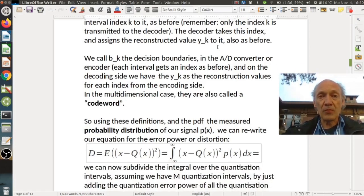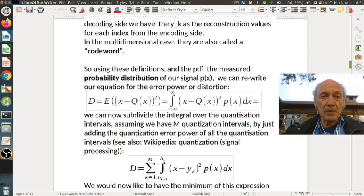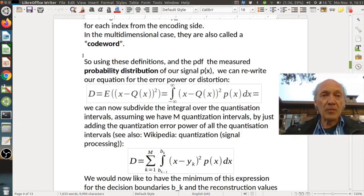Except that now for each interval we have a dedicated reconstruction value. So we call b_k the decision boundaries in the A to D converter or encoder, where each interval gets an index as before, and on the decoding side, where we have y_k as the reconstruction values for each index from the encoding side. In the multidimensional case they are also called a codeword. And this is something that will come up.